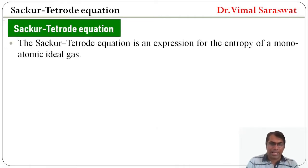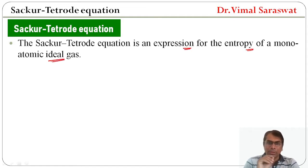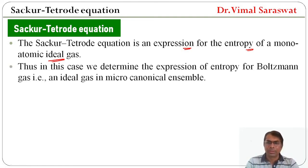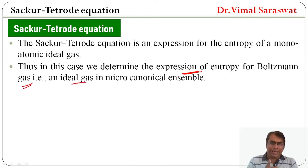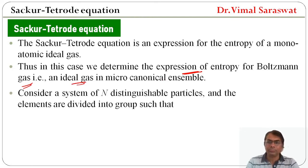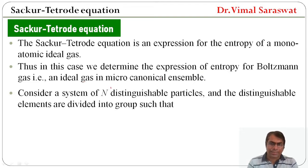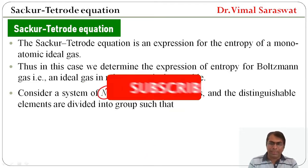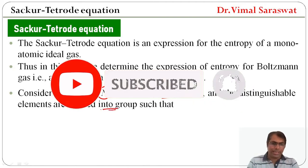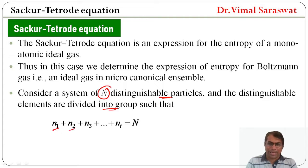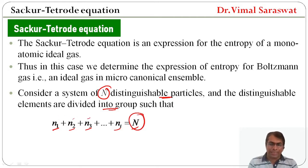The Sackur-Tetrode equation is an expression for the entropy of a monatomic ideal gas. In this case we determine the expression of entropy for Boltzmann's gas, that is an ideal gas in the micro-canonical ensemble. For it, we consider a system of N distinguishable particles, where the distinguishable elements are divided into groups such that n1 + n2 + n3 + ... + ni = N. Here N is the total number of particles, whereas n1, n2, n3 are the number of particles in level 1, level 2, level 3, and so on.